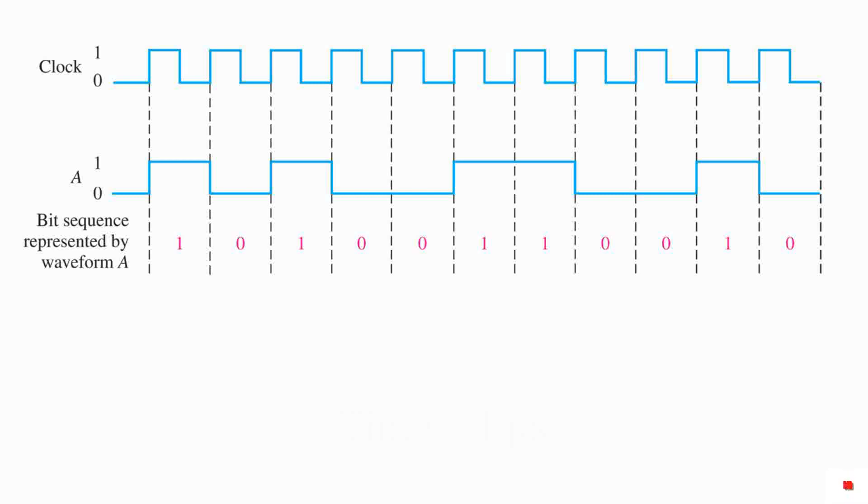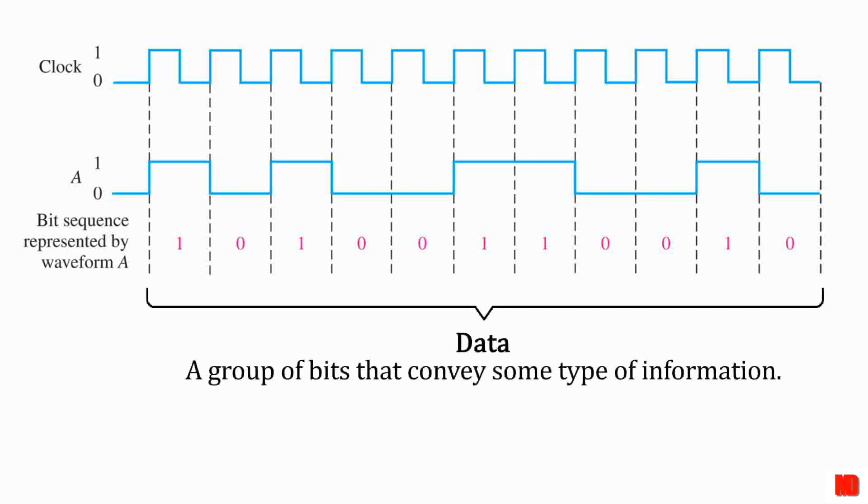We've talked about how digital waveforms are used to carry binary information. This binary information is what is called data, a group of bits that convey some type of information.